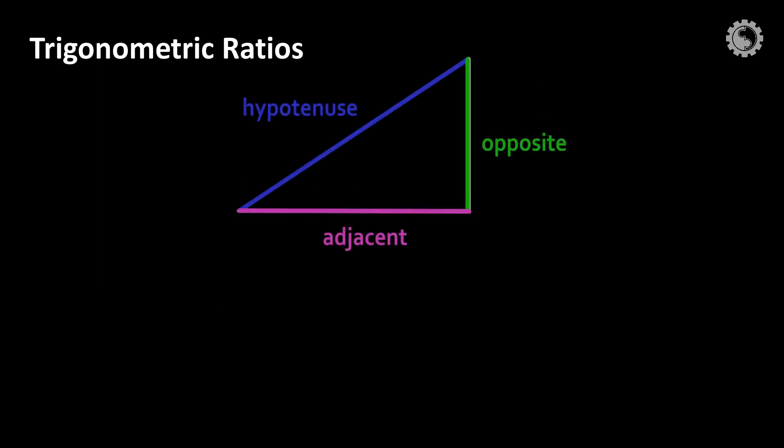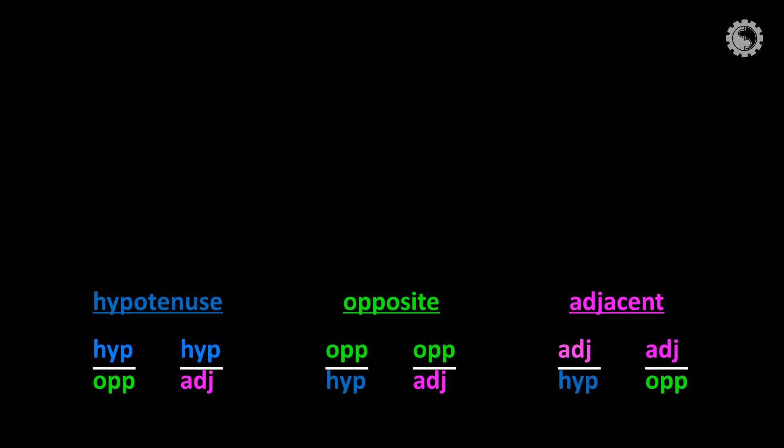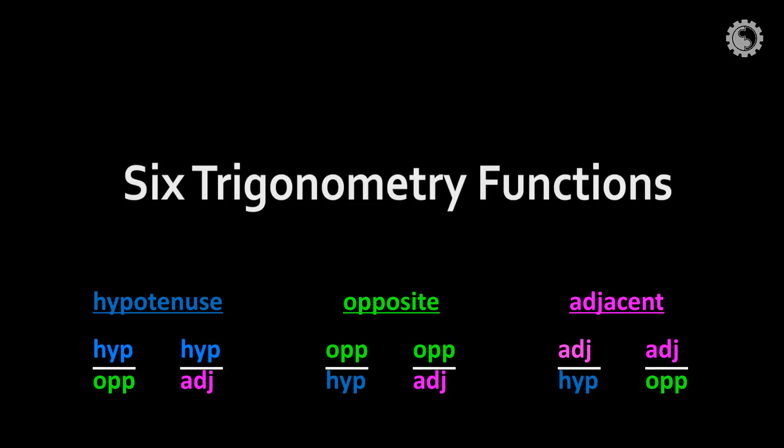All three sides are divided by the others too. Hypotenuse divided by opposite and adjacent. Opposite divided by hypotenuse and adjacent. Adjacent divided by hypotenuse and opposite. These ratios make the six trigonometric functions.